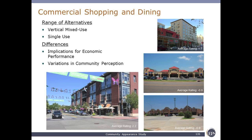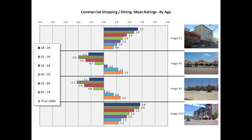Moving into what Oklahoma City residents like, starting with commercial shopping and dining. We've got a range of alternatives — vertical mixed use as well as some single-use large-format examples. The lower left image has an average rating of 2.2 on a scale of negative 5 to positive 5. The lower right actually has a negative rating of 0.9. There are differences both in community perception and economic performance.